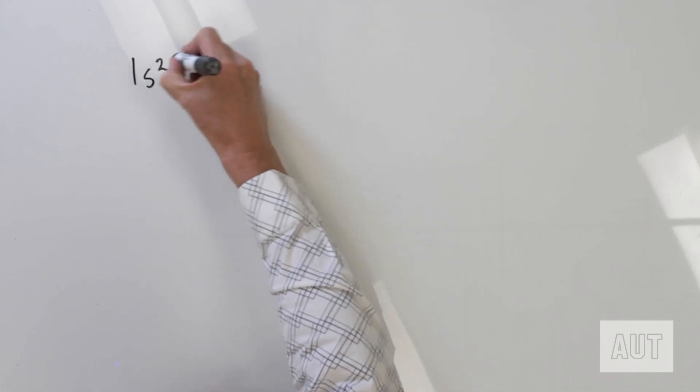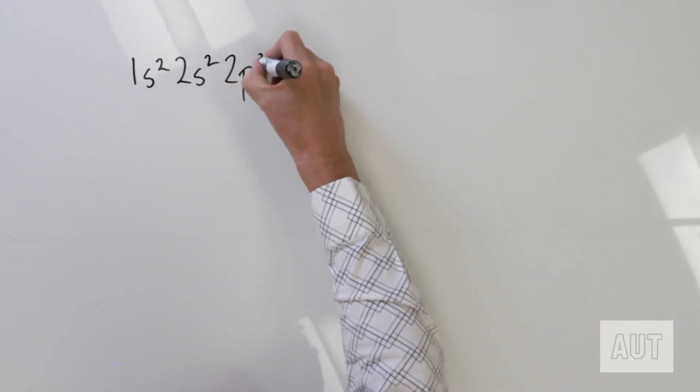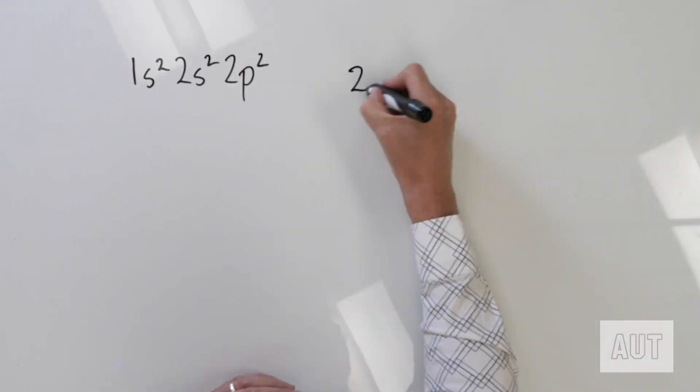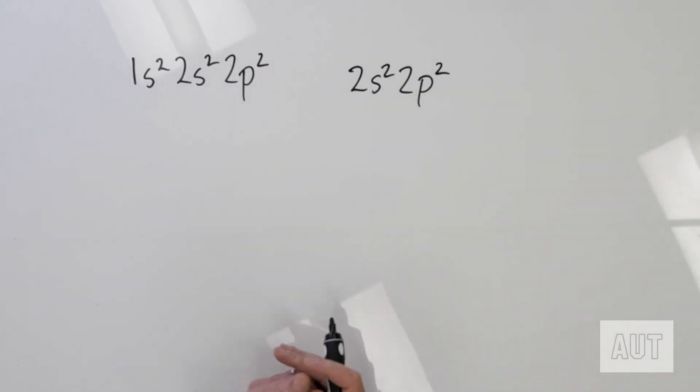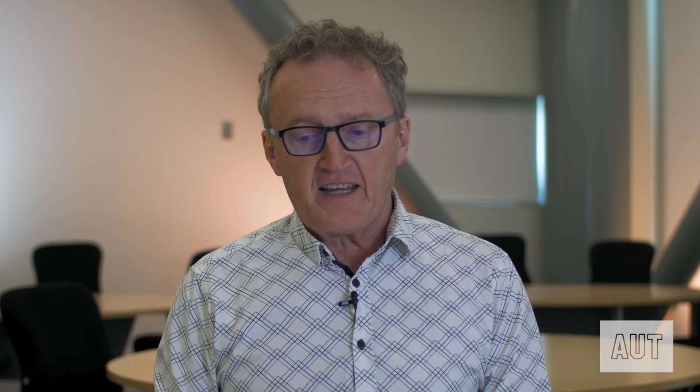Let's kick off by looking at a carbon atom, and specifically the valence electron configuration of carbon. The full electron configuration of carbon is 1s2, 2s2, 2p2. The valence electron configuration — remember the highest value of n, your principal quantum number — is 2s2, 2p2. So we've got four valence electrons in a carbon atom that should be available for bonding.